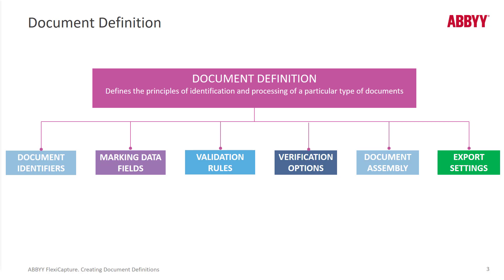We can also set up different document assembly rules. We may have a main document and then supporting pages — we can certainly handle that. A very important thing we need to do at the document definition level is set up exports, and that's plural — we can set up more than one export.